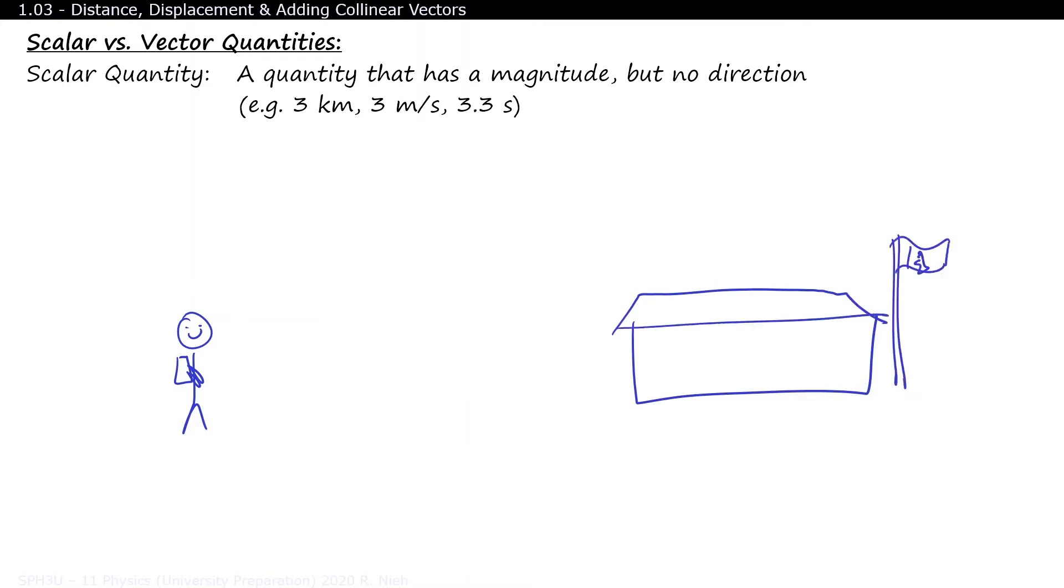Scalar quantities don't care about direction, so if I walk positive 3 kilometers to get to school, I still walk positive 3 kilometers to get back home.